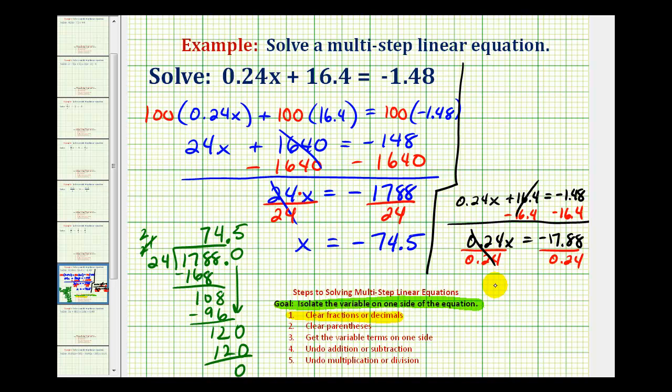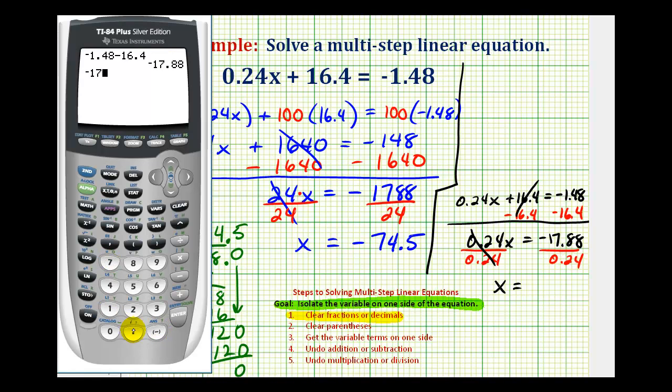So here we'd have one x, or just x, and then we can go back to the calculator. And we'd have negative seventeen point eight eight divided by zero point two four.